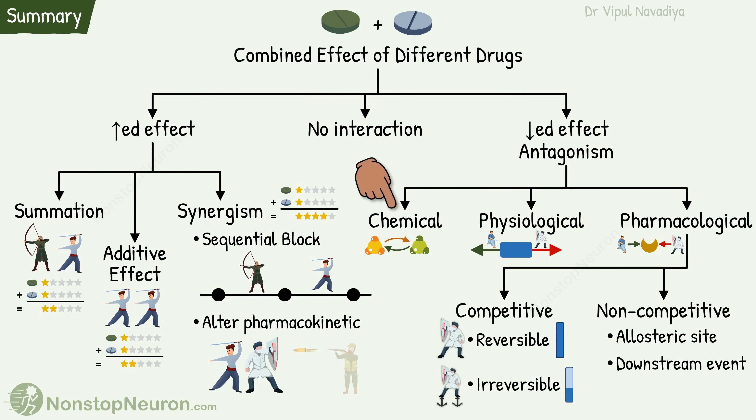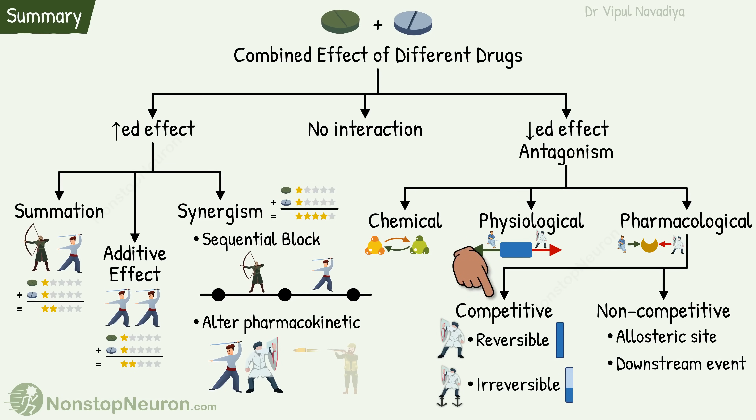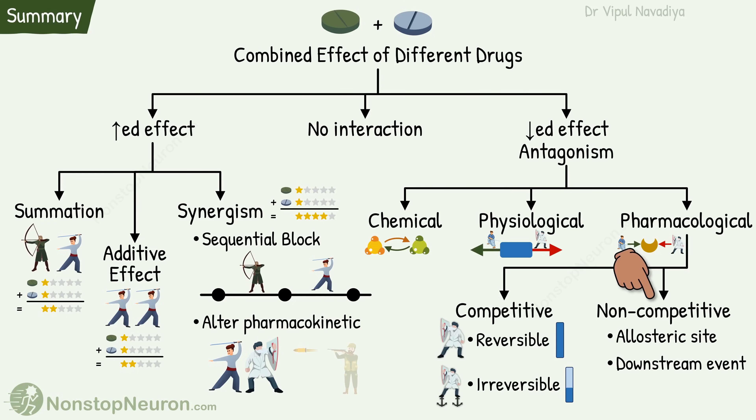In chemical antagonism, one substance neutralizes the other purely by chemical means. In physiological antagonism, both substances act by different mechanisms and produce opposite effects on the same physiological parameter. Pharmacological or receptor antagonism can be competitive or non-competitive. In reversible competitive antagonism, antagonist binding is weak, so maximum response can be achieved by increasing agonist concentration. In irreversible antagonism, the antagonist binds with a strong covalent bond, so maximum response cannot be achieved. In non-competitive antagonism, the antagonist binds at an allosteric site or interferes with downstream signal molecules.